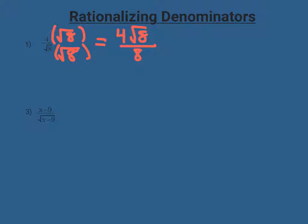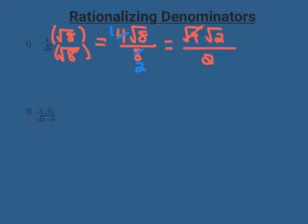Now we want to simplify. First, 4 over 8 simplifies to one half, and then we can also simplify radical 8. Radical 8 simplifies to radical 4 times radical 2. I'm going to put that over the 2, and the square root of 4 is 2. That 2 on top is going to cancel with the 2 on the bottom, leaving me with just radical 2.